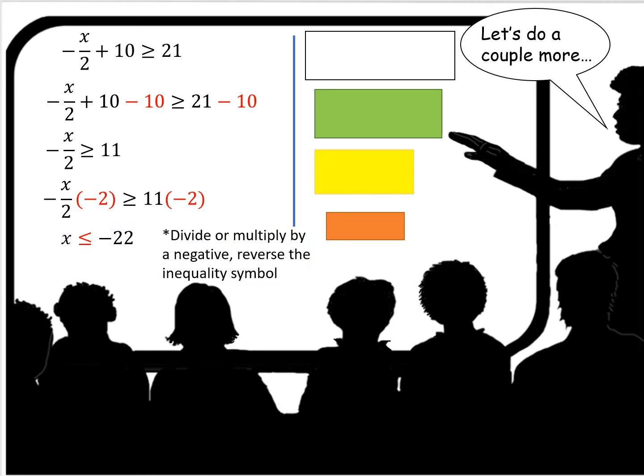And then we have to multiply times negative 2 on both sides to isolate the variable. When you multiply or divide by a negative in an inequality, you reverse the inequality symbol.